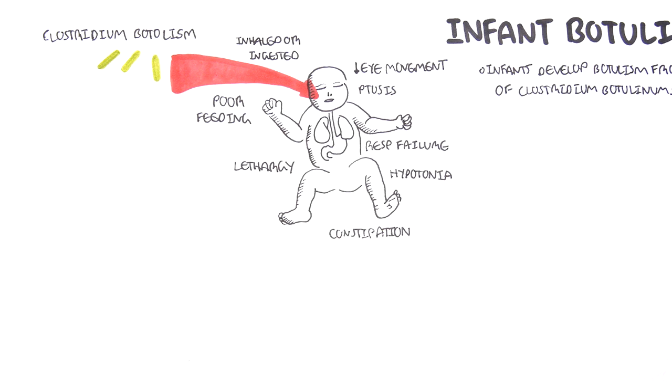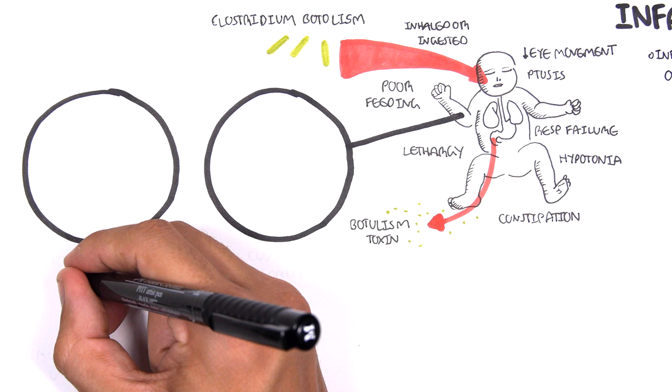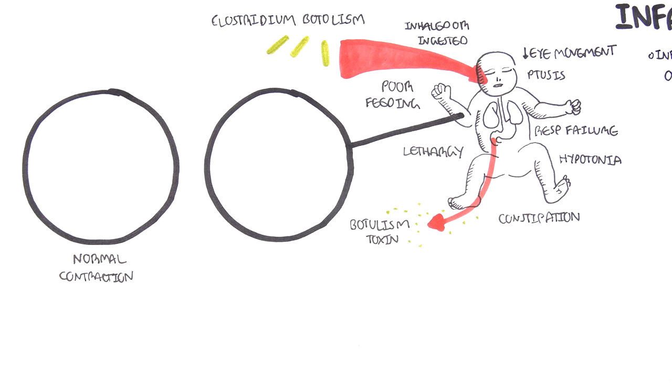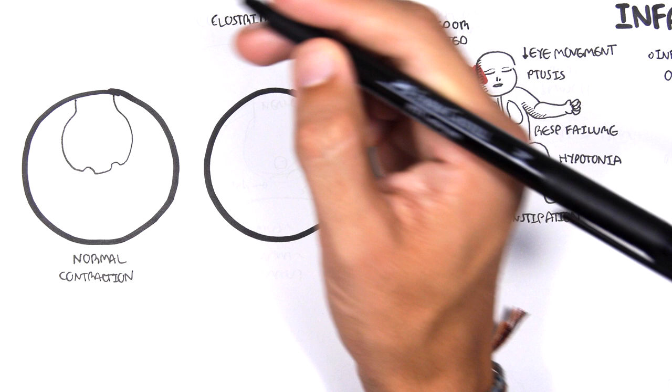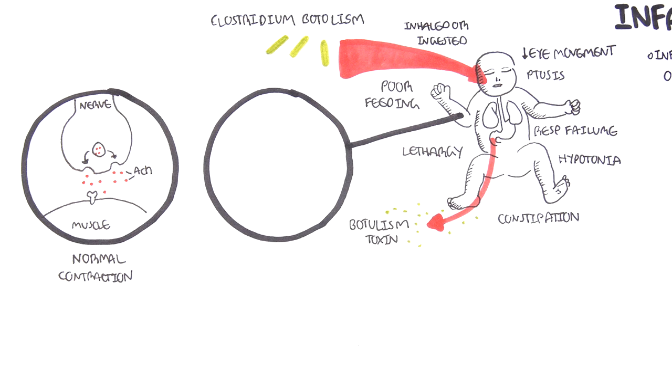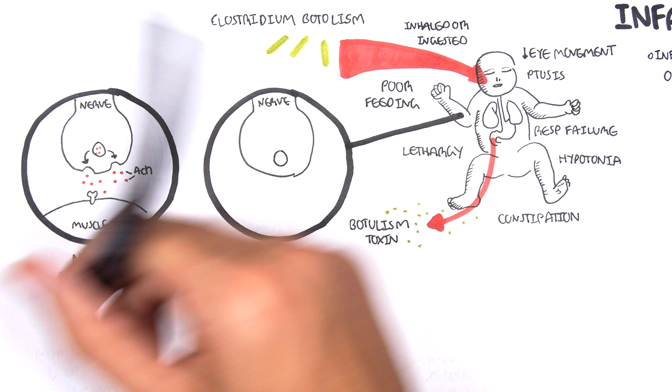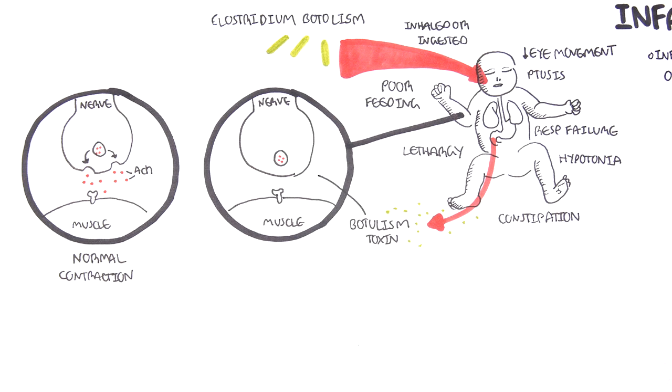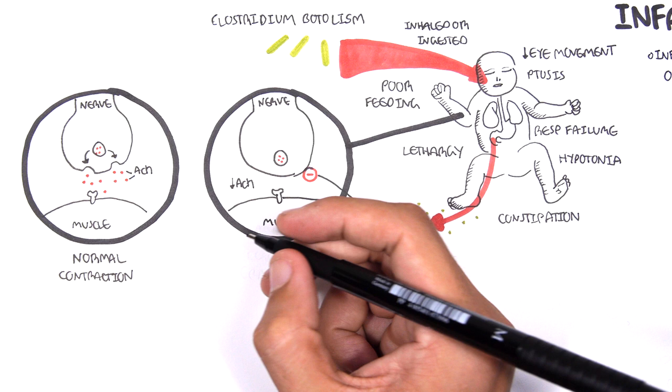When a muscle normally contracts, the nerves that supply the muscle release peptides called acetylcholine in the synaptic cleft. The acetylcholine will then bind onto receptors on the muscle cells causing the muscle to contract. In infant botulism, the nerve is unable to release acetylcholine because the botulinum toxin inhibits acetylcholine release from the nerve cells. Because there is no acetylcholine being released, there is no acetylcholine that can bind onto the receptors on the muscle fibers causing no contraction. And so we get weakening of the muscle.